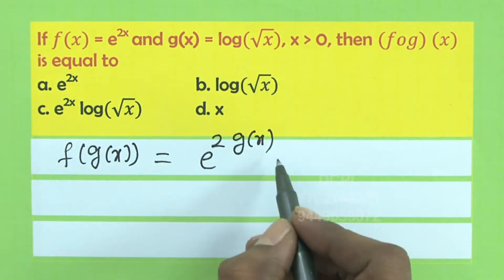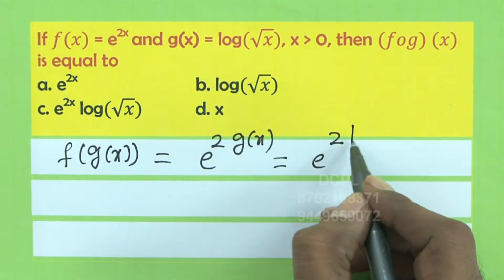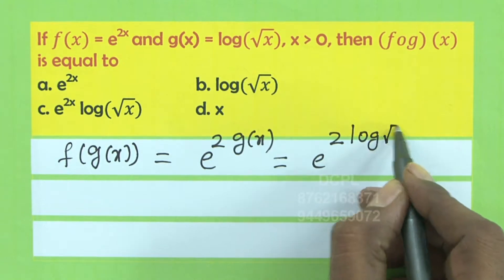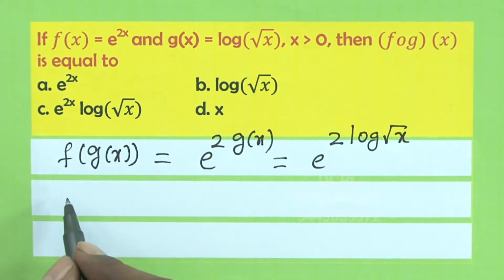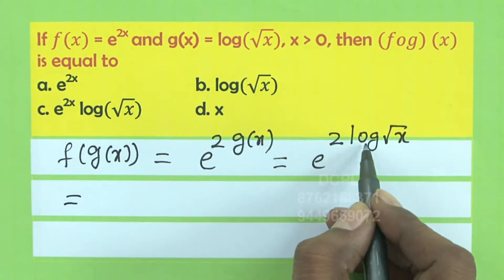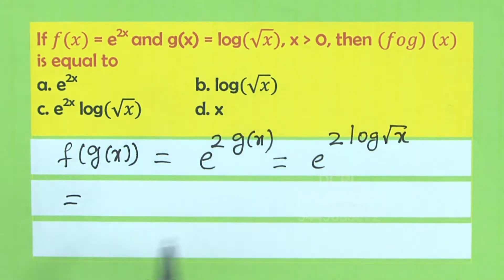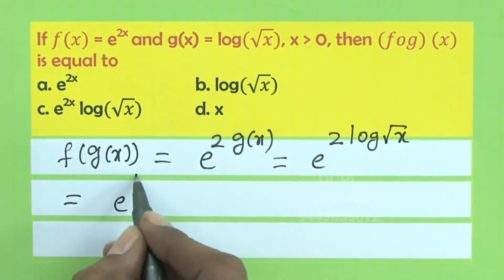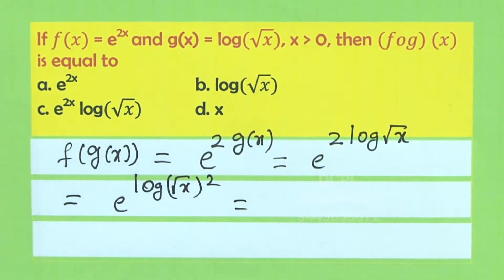But what is g(x)? g(x) = log√x. So f(g(x)) = e^(2·log√x). Using the rule a^(log b) = b^a, that is equal to e^(log(√x)²). So we get e^(log(√x)²).